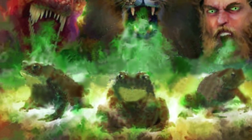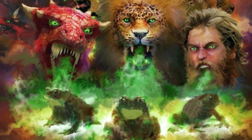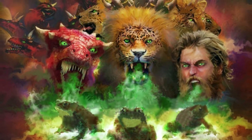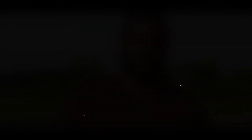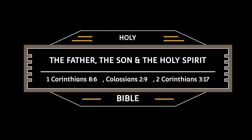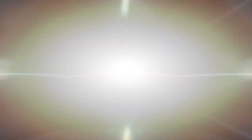In Revelation chapter 16 verse 13, John the revelator said: 'I saw three impure spirits that looked like frogs. They came out of the mouth of the dragon, out of the mouth of the beast, and out of the mouth of the false prophet.' And we have the Holy Trinity, which is the Father, the Son, and the Holy Spirit. Satan, when he has a demonic trinity, has the dragon, the beast, and the false prophet. He likes to simply counteract what God is doing — he wants to be like God, but he does so by manipulating creation.